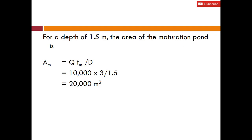For a depth of 1.5 m, the area of a maturation pond is calculated as Q × tm / D = 20,000 m². Note this is the area of one maturation pond, not two, because the maturation ponds are arranged in series, not in parallel. The same flow Q passes through each pond in sequence, so the same area applies to each individual pond.